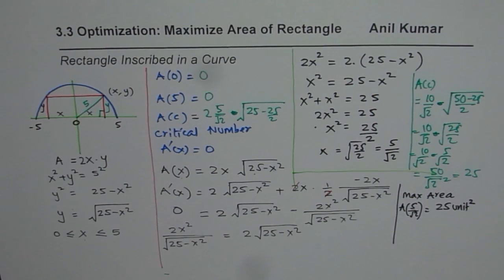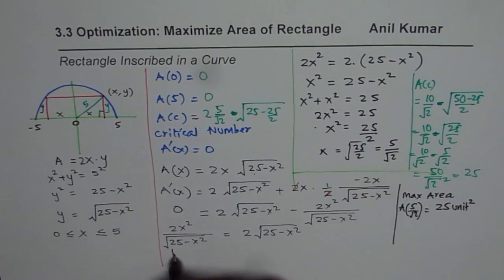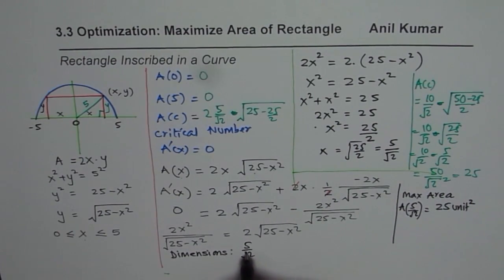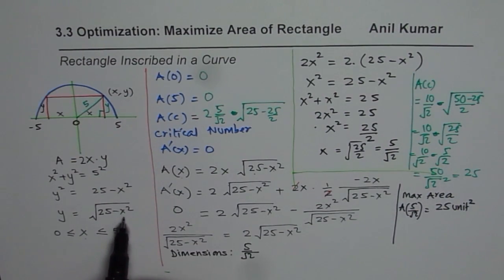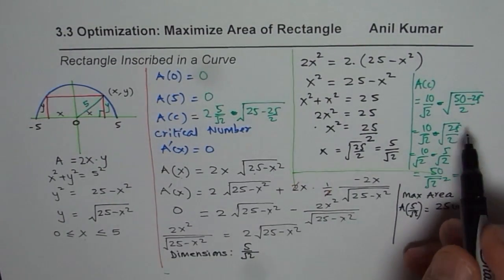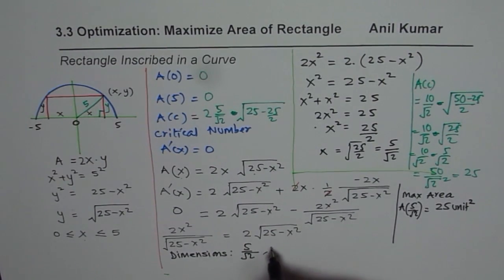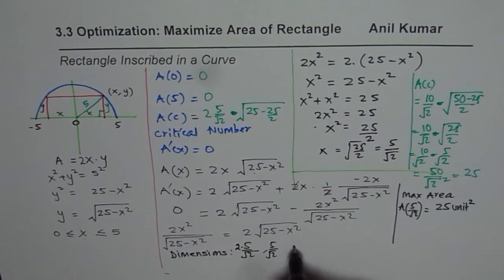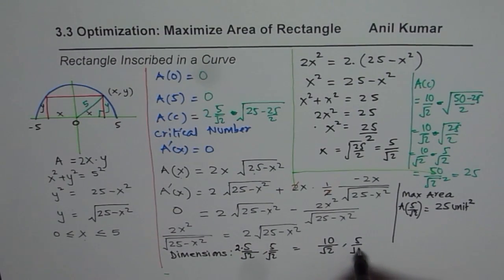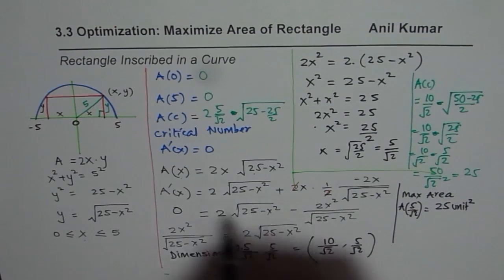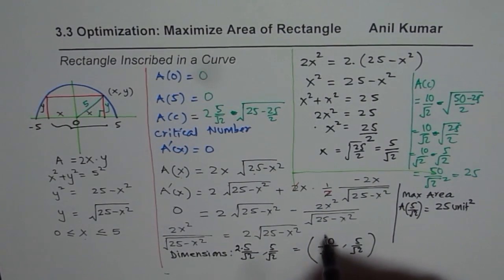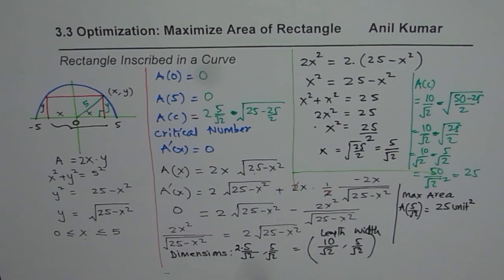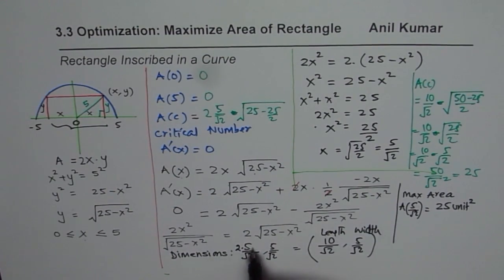So that is how you get the dimensions of the rectangle and its maximum area. The x value is 5/√2. Substituting into y = √(25 − x²) also gives y = 5/√2. However, the full width (length) of the rectangle is 2x = 10/√2 and the height (width) is y = 5/√2. So the dimensions are 10/√2 by 5/√2, and the maximum area is 25 square units.